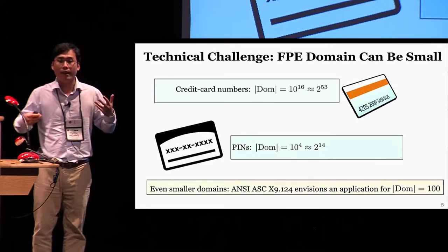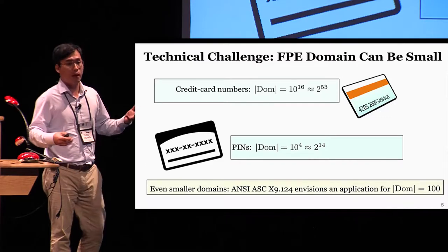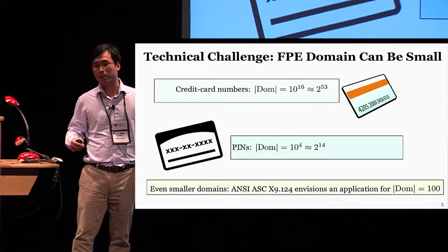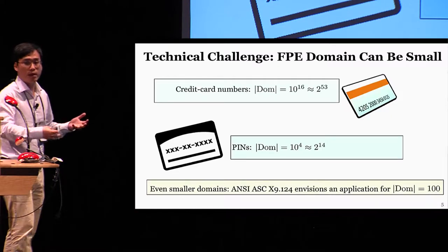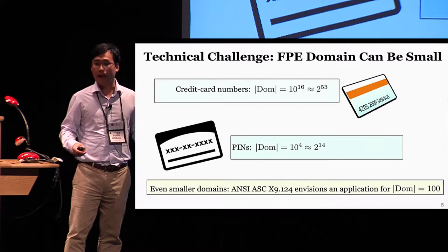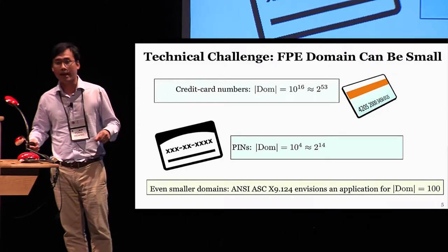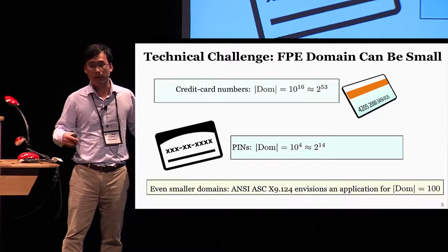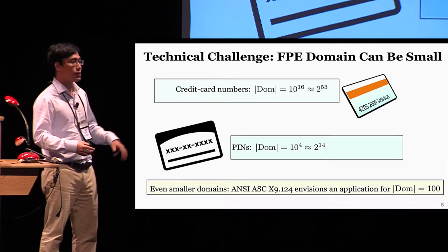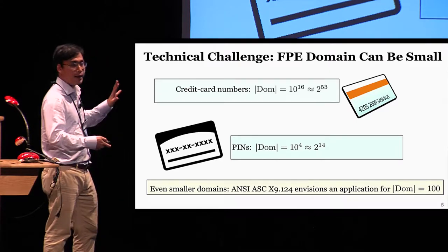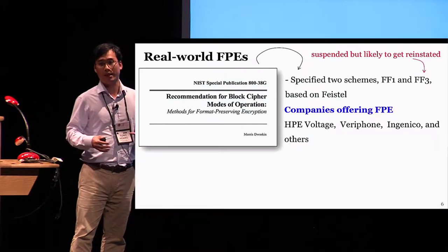A particularly annoying challenge in designing FPE is that unlike traditional block ciphers, the domain here can be very small. In fact, there are applications in which the domain size is just a hundred. This crucial point repeatedly leads to attacks with exponential running time that are still practical on small domains. You will see those attacks in a couple of minutes, but before I get into that, let me briefly go over some real-world FPE schemes.